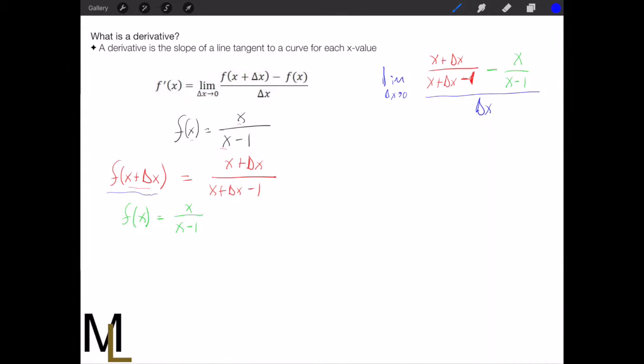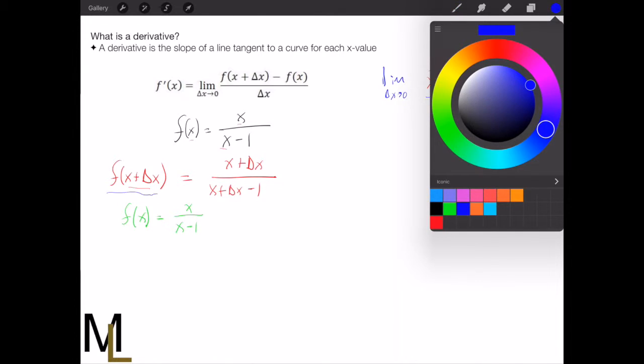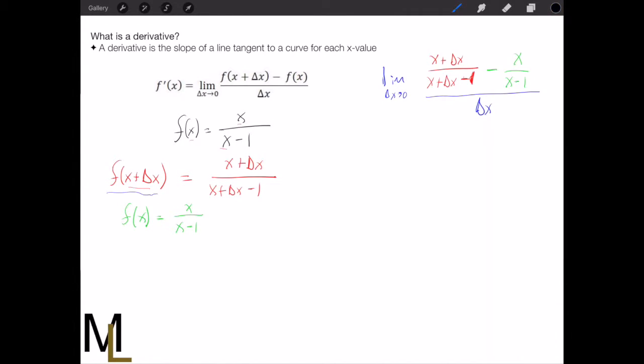So this one's more challenging because we have fractions here and we're going to actually have to find the common denominator to subtract those two functions. So in this case what I'm going to do is I'm going to multiply the first one by x minus 1 divided by x minus 1. So just multiply the first guy by 1, a well-chosen 1.